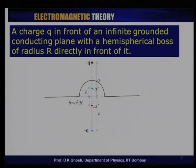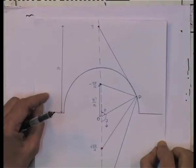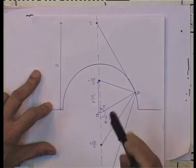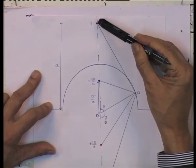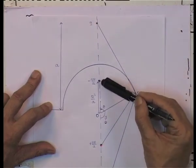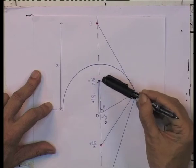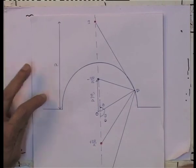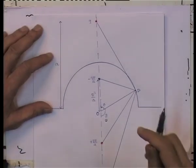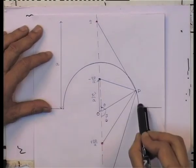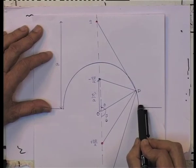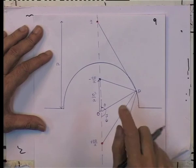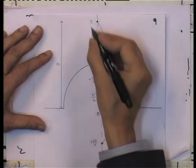You can convince yourself that these four charges keep the potential at zero on the required surfaces. To calculate the charge on the surface of the hemispherical boss, we take an arbitrary point P at radius R and angle θ on the hemisphere.